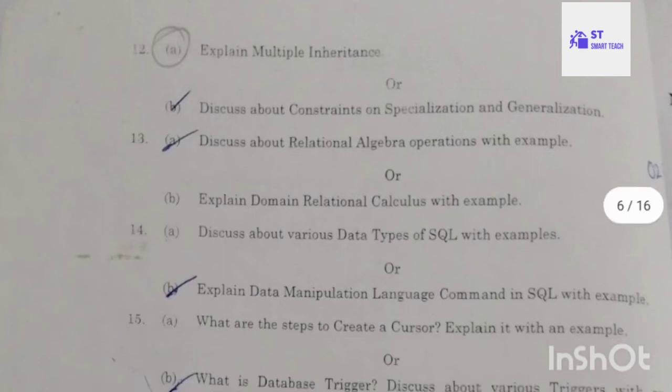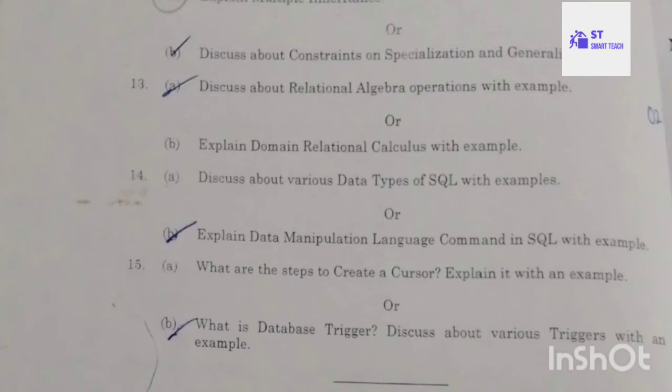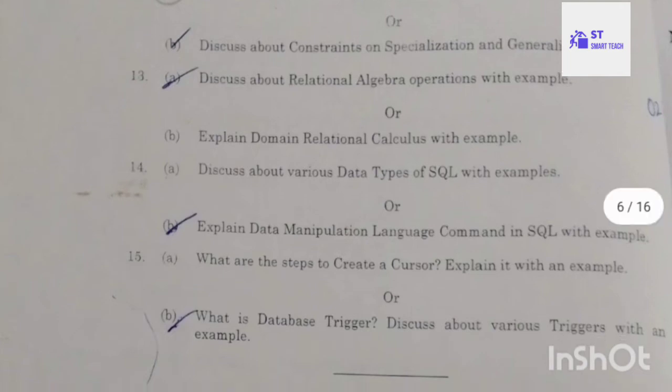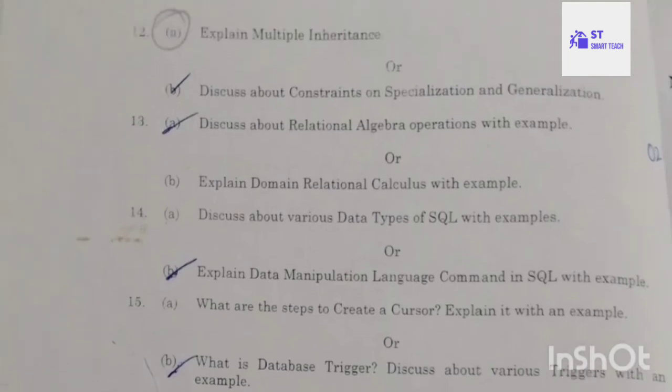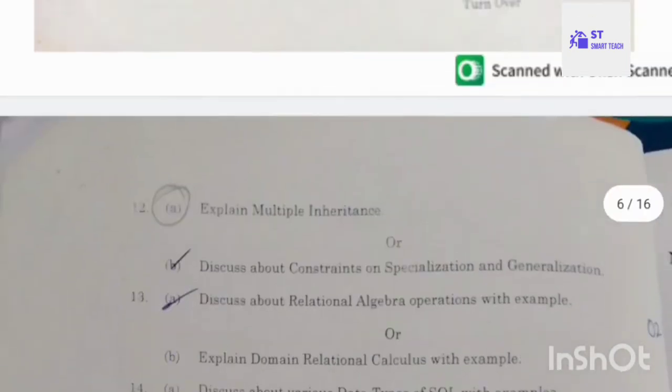2019 Part B continued: discuss about various data types in SQL with example; explain Data Manipulation Language commands in SQL with examples. What are the steps to create a cursor — explain with an example; what is a database trigger — discuss about various triggers with an example. Part B has ten questions total, two from each unit, and you answer one per unit.